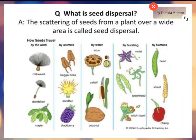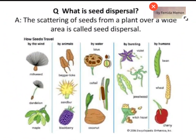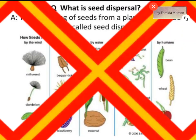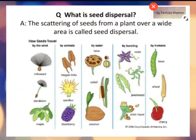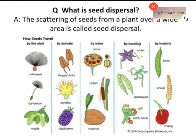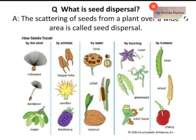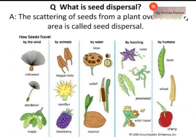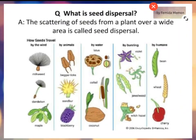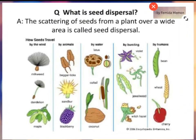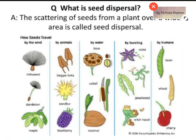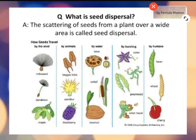Seed dispersal: the scattering of seeds from a plant over a wide area is called seed dispersal. Seed dispersal occurs in five ways: 1. Dispersal by wind. 2. Dispersal by animals. 3. Dispersal by water. 4. Dispersal by bursting or explosive mechanism. 5. Dispersal by humans.